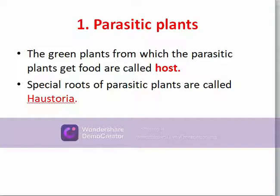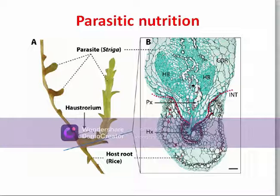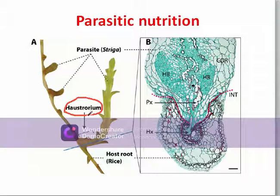Parasitic plants gain food from other plants, which is why those other plants are called host plants. Plants can get their nutrition through haustoria — the special roots of parasitic plants. The parasitic plants suck the sap from the stems of the host using these special roots. The haustoria penetrate into the host tissue and make connections with the conducting elements of the host to draw nourishment.